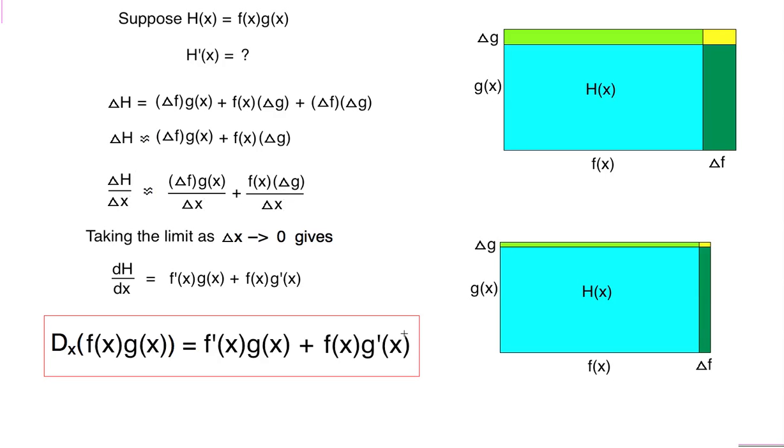One other important point to make here, or technical point anyway. Here in this picture I suggested that when delta x gets smaller, delta f gets smaller, and delta g gets smaller. Turns out that's true, but there's a little bit of proof required there. I'll address that issue a little more when we talk about the official proof of the product rule in the next episode.